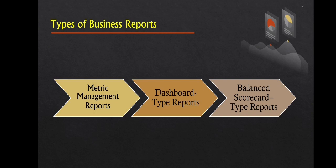There are three types of business reports. First is the metric management reports, which helps manage business performance through metrics. Next is dashboard type reports, which is a graphical presentation of several performance indicators in a single page using dials or gauges. And number three, balance scorecard type reports, which includes financial customer, business process, and learning and growth indicators.